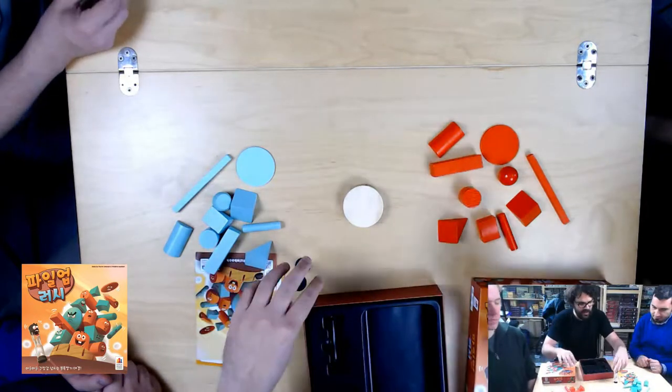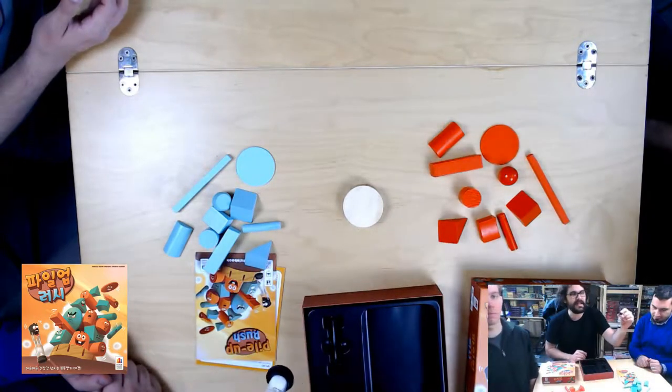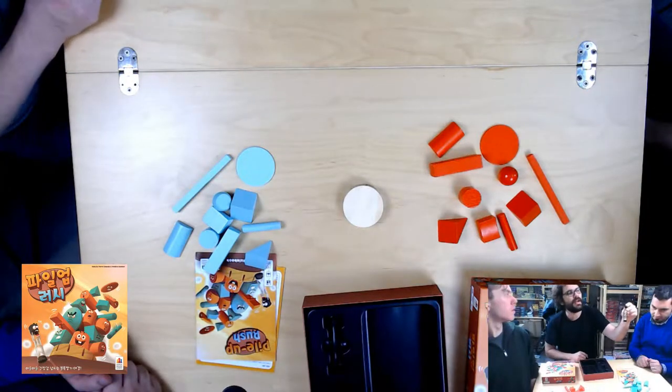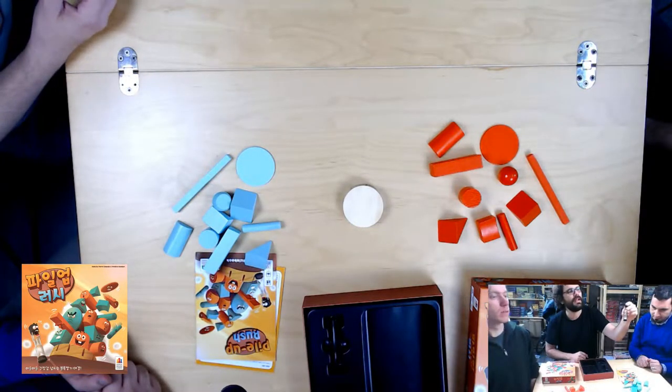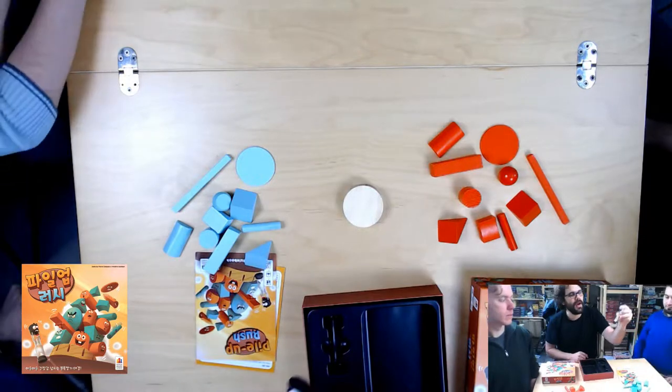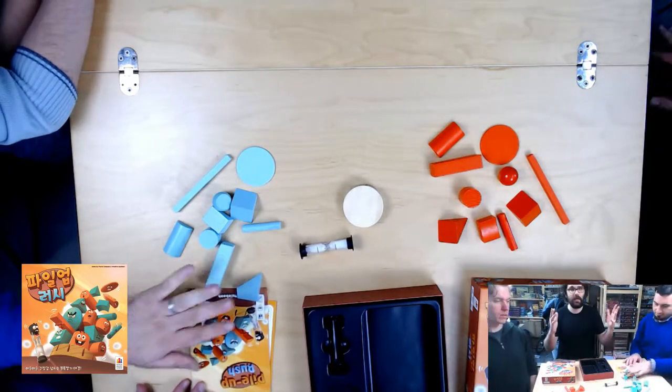So all we're going to do is split them in half, and then the last thing is there's a sand timer with a little line to show when it's halfway gone. Alright, so I'll set that down. So what are we doing?